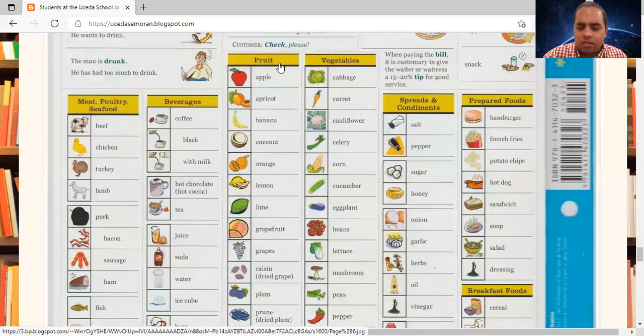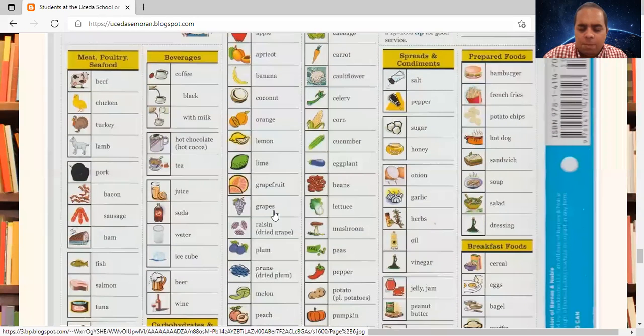Fruit. Apple. Apricot. Banana. Coconut. Orange. Lemon. Lime. Grapefruit. Grapes. Raisin. Dried grape. Raisin is the same as dried grape.